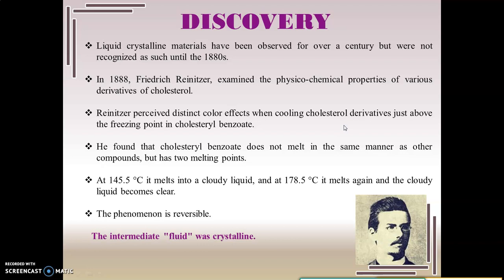He also noticed that cholesterol benzoate did not melt in a similar manner to any other compound — no sharp change was observed from the solid to the liquid phase. Instead, he found that there are two melting points for this molecule. When he started heating cholesterol benzoate, at 145.5 degrees centigrade it started melting and turned into a cloudy liquid. Continuing to heat, at 178.5 degrees centigrade there was a change to a clear liquid — the cloudiness had disappeared.